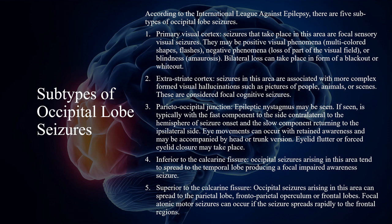The second subtype is the extrastriata cortex. Seizures in this area are associated with more complex-formed visual hallucinations such as pictures of people, animals, or scenes. These are considered focal cognitive seizures.